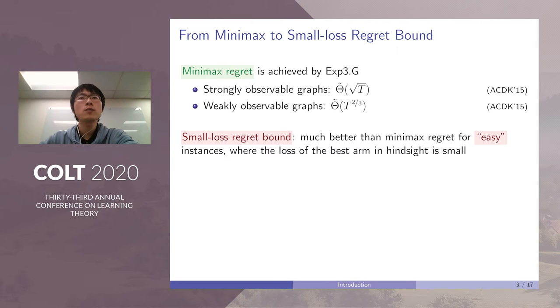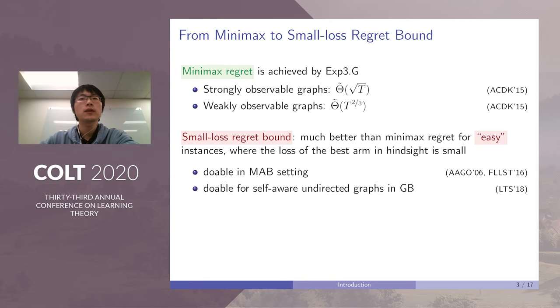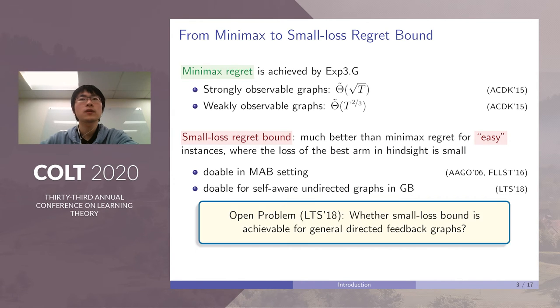However, small-loss regret bounds can be much better than minimax regret for easy instances where the loss of the best arm in hindsight is small. Actually, there are many previous works showing that in classic MAB, a small-loss bound is achievable. However, for GMAB, this is not well studied. There is only one previous work by Lykouris et al. showing that this is doable for self-aware undirected graphs. And they proposed an open problem whether this is doable for general directed feedback graphs.